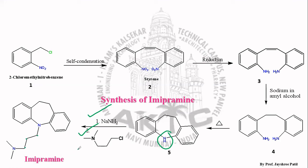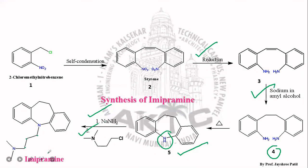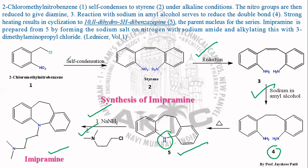To summarize: the synthesis of imipramine involves self-condensation of 2-chloromethyl nitrobenzene, followed by reduction using a reducing agent to get the amino derivative. The amino derivative is acted upon by sodium in amyl alcohol to reduce the double bond in structure 3. Strong heating of structure 4 undergoes cyclization to give the main pharmacophore, the tricyclic system. Once the tricyclic pharmacophore is obtained, it is acted upon by a base followed by addition of the side chain, ultimately giving imipramine as the final product.